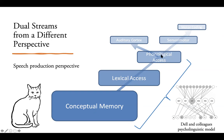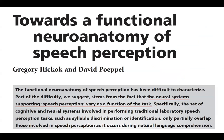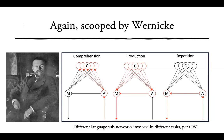Given that this is the network, the engagement of sub-portions of it will be task-dependent. This is something David Poeppel and I hit on hard from the beginning — the idea that the neural systems supporting speech perception vary as a function of task. Some speech perception tasks tap into ventral stream mechanisms, while other speech perception tasks are basically motor-related tasks in disguise. Wernicke also anticipated this, proposing that different language sub-networks are involved in different tasks: comprehension involves one part, repetition involves a subset, and production involves the whole thing.